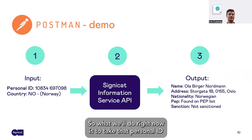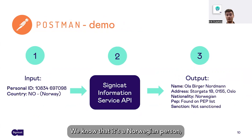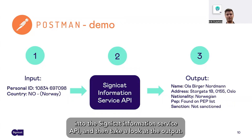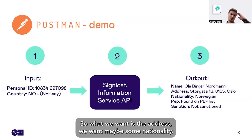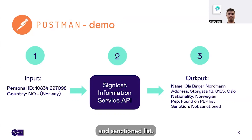What we'll do now is take the personal ID we got from the authentication — we know it's a Norwegian person — and send just those two information points into the Signicat Information Service API and look at the output. We want the address, some nationality information, and we also want to check the politically exposed person and sanctioned lists.